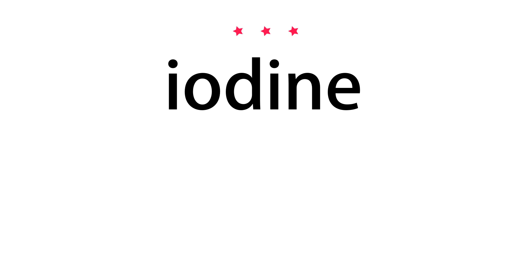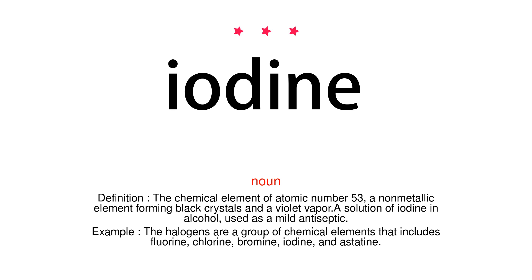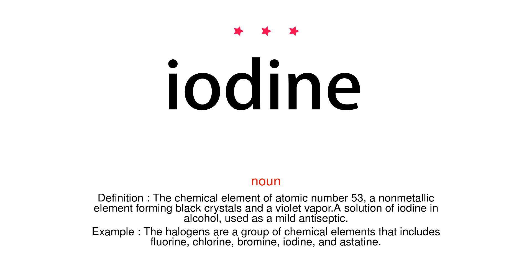Iodine. Noun. Definition. The chemical element of atomic number 53. A non-metallic element forming black crystals and a violet vapor. A solution of iodine in alcohol, used as a mild antiseptic.